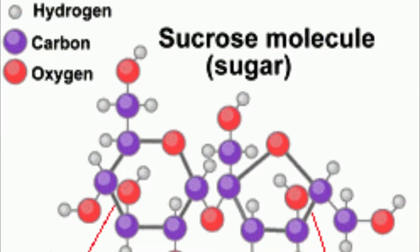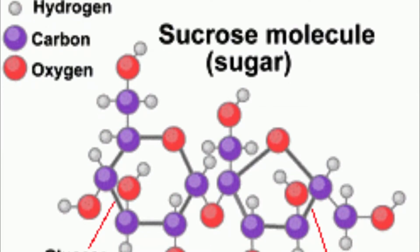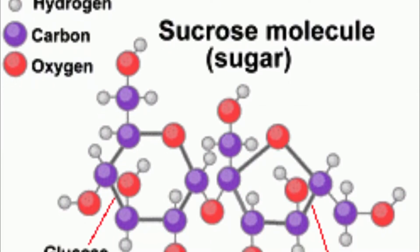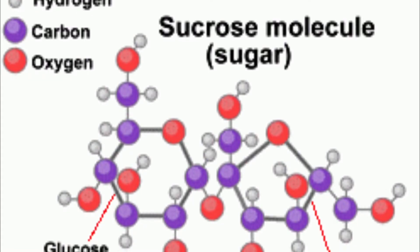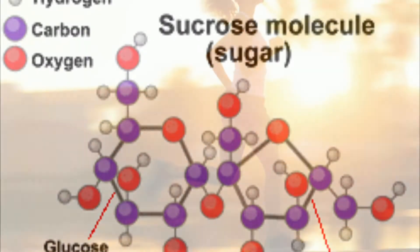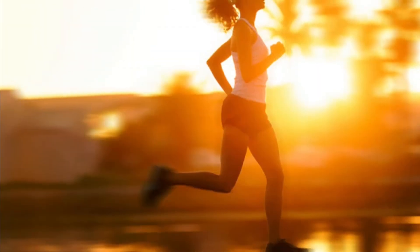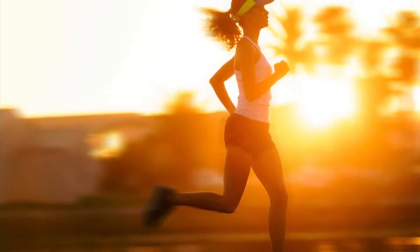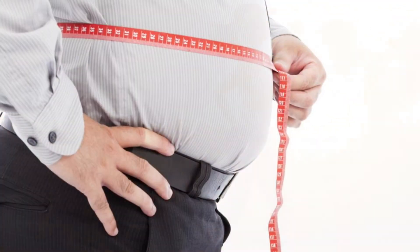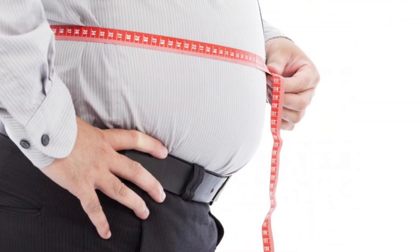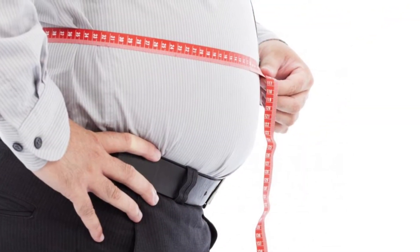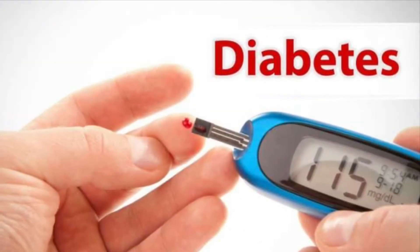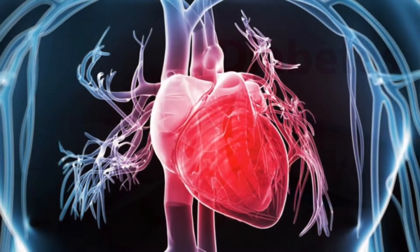It is a carbohydrate made up of 12 atoms of carbon, 22 atoms of hydrogen, and 11 atoms of oxygen. It is also used for energy, but too much can also produce diseases in your body. It can cause problems like obesity, which can cause many other problems like diabetes and cardiovascular disease.